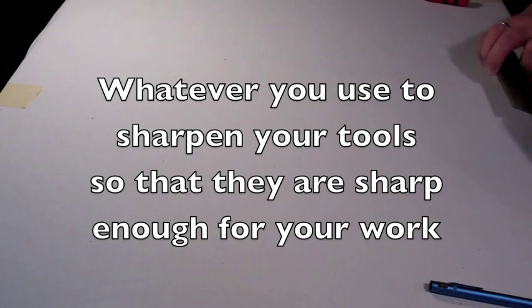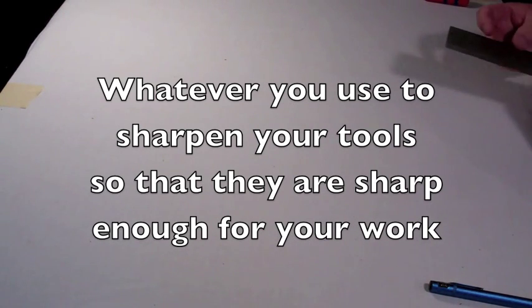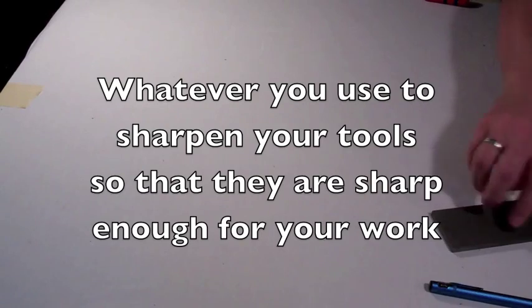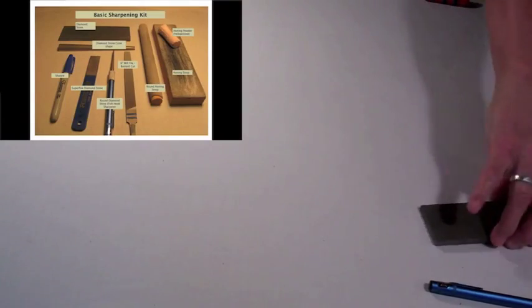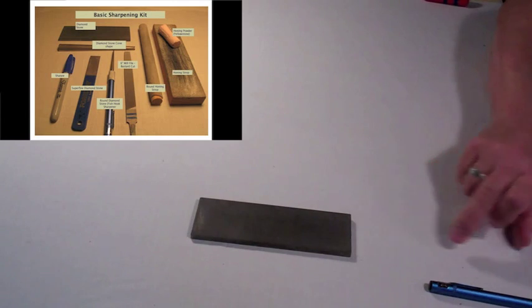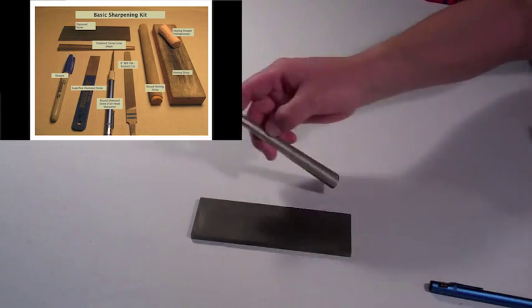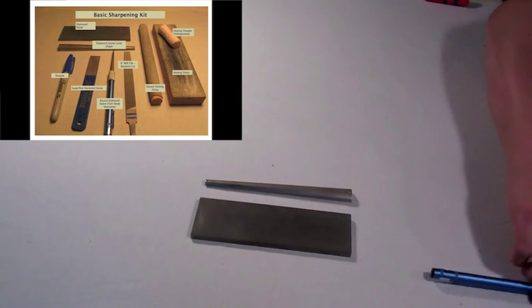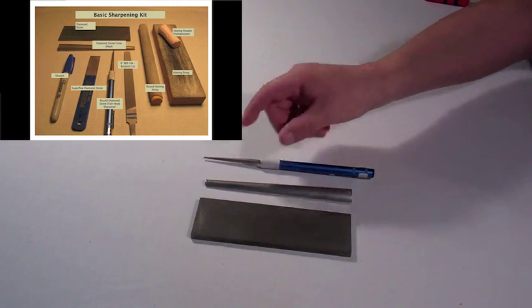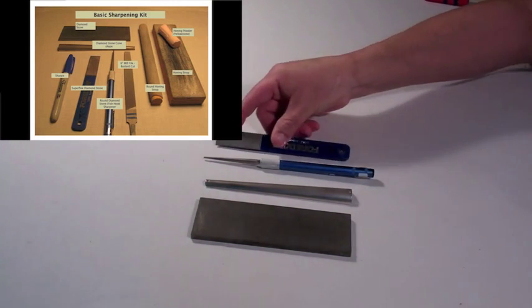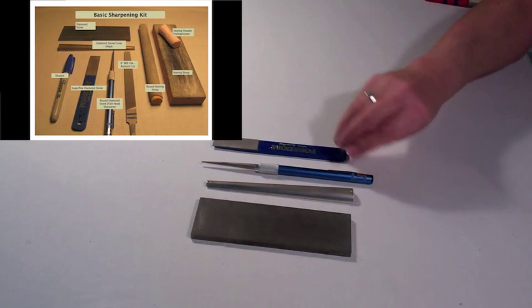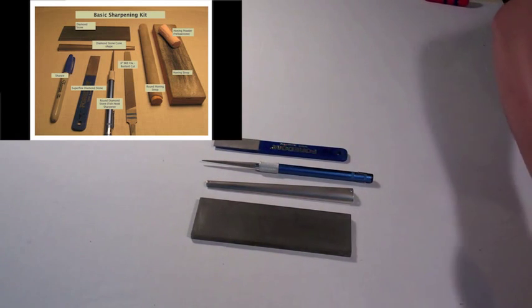Whichever sharpening tool you use that gets your tool sharp enough for you to use, those are the right tools for you. My basic tool kit is a diamond stone about 600 grit, a cone diamond, and a fish hook diamond stone.